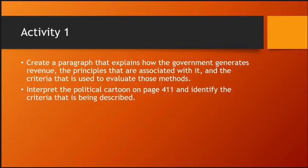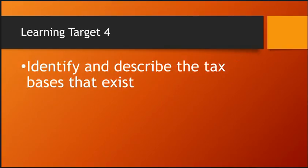For our first activity, create a quick paragraph explaining how the government generates revenue, the principles associated with it, and the criteria used to evaluate those methods. There's also a political cartoon on page 411 in your textbook — see if you can figure out which criteria they're making fun of. When you're done, go ahead and move forward.